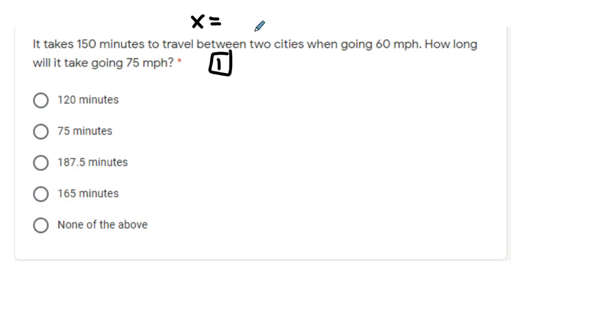So in this case, x is going to be speed, the thing that you can most directly control. Therefore, y must be time. If you set up the equation, it would be y equals k divided by x.